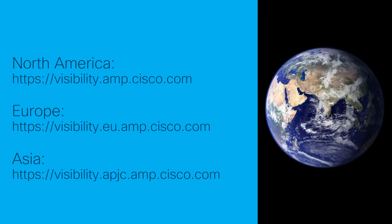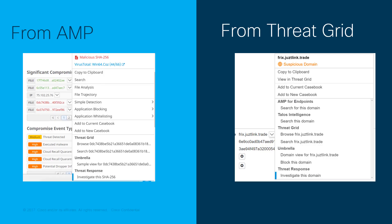You can get directly to Threat Response by going to any of these URLs. Pick the one that makes the most sense for your location and go there in your browser of choice. There are other ways to access the product as well. There are pivot points built into the consoles of both AMP for Endpoints and Threat Grid, and more coming as Threat Response capability gets built into the entire Cisco security portfolio.